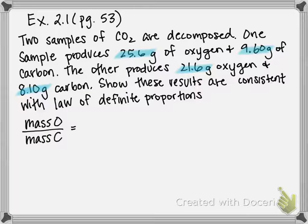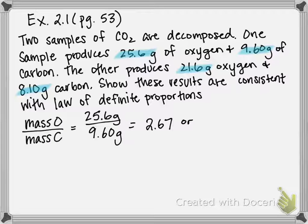So for sample number one that's going to be 25.6 grams divided by 9.6 grams and we get 2.67 grams of oxygen per one gram of carbon. So that's our ratio for our first set of compounds.